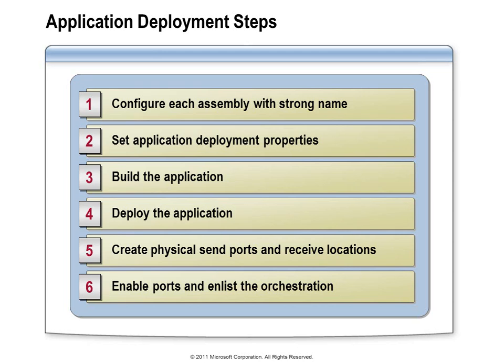Once you have those settings configured, you're ready to build your assemblies. And once you have the assemblies built, you can ask Visual Studio to deploy them to the BizTalk runtime. At that point, Visual Studio will register each component with the BizTalk management database that you've specified, and it can also install the assembly in the GAC. Once that's complete, you can go create the ports that are required for your application. And after that, you can start your application, enabling and starting the ports, and listing and starting the orchestrations.